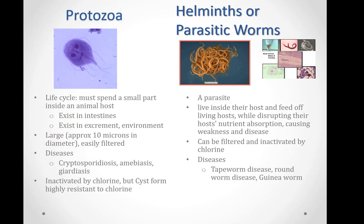Parasitic worms, or helminths, are parasites that live inside their host and feed off the living host while disrupting nutrient absorption, causing weakness and disease. They don't kill the host because they would then have to find a new host — they weaken the host and make it their home. Parasitic worms are predominantly large, so they can be filtered and are inactivated by chlorine. Diseases include tapeworm disease, roundworm disease, and guinea worm disease.